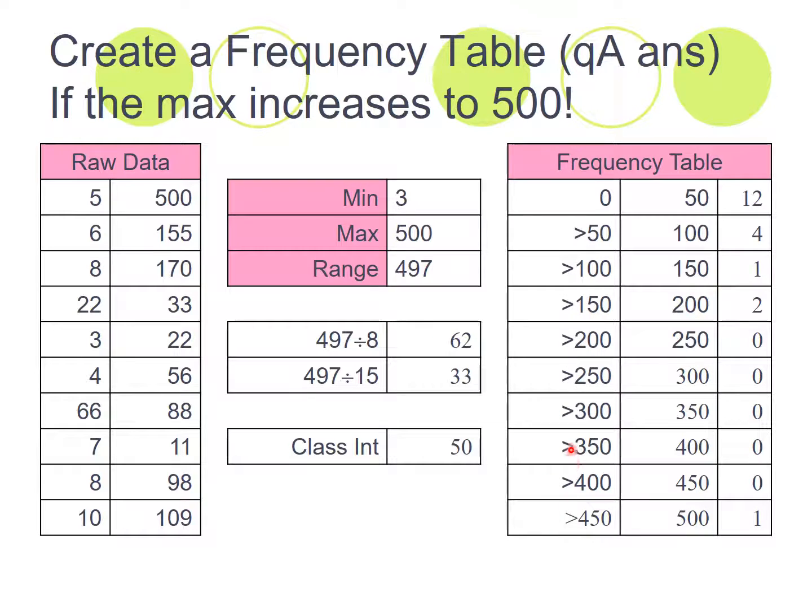So we've got 1, 2, 3, 4, 5, 6, 7, 8, 9, 10. We ended up with 10. 10 is between 8 and 15. So that's perfect.